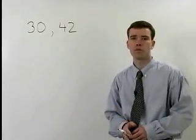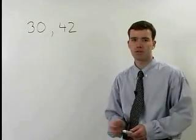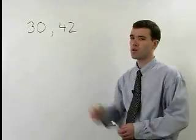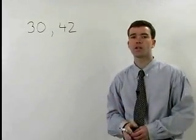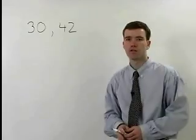To find the greatest common factor between two monomials that are just numbers like 30 and 42, we start by setting up a factor tree for each of those numbers.